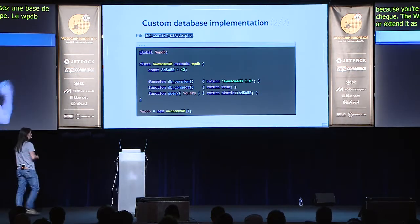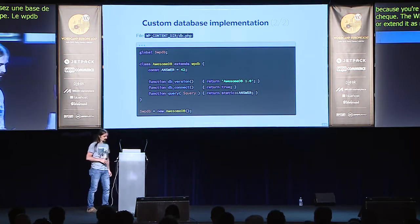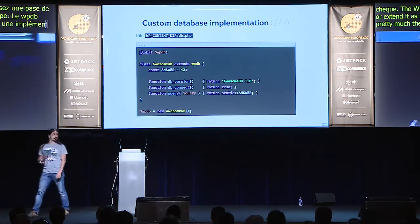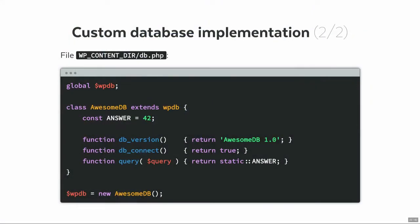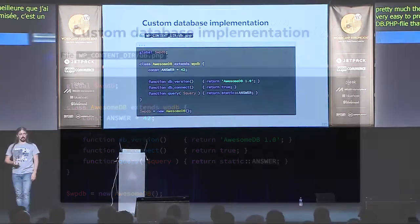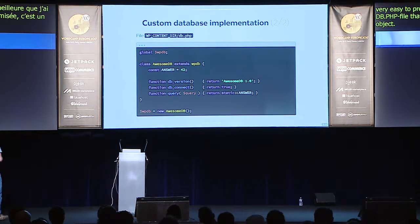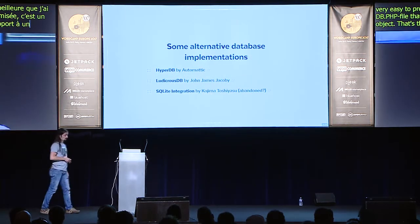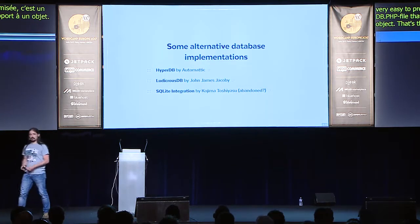This allows you, for example, to provide a completely different database implementation where the normal checks that WordPress does — where it tells you that you need a certain version of MySQL — would not make any sense because you're actually running with a different database. The WP_DB class is also loaded so you can either completely replace it or extend it as needed. Here's a custom database implementation example — it's very easy to provide one: it's basically just a db.php file that sets the wpdb global variable to some instance of an object. That's the only requirement. There are also some alternative database implementations like HyperDB, which is probably the best known because it allows you to use multiple databases so they can act as one.